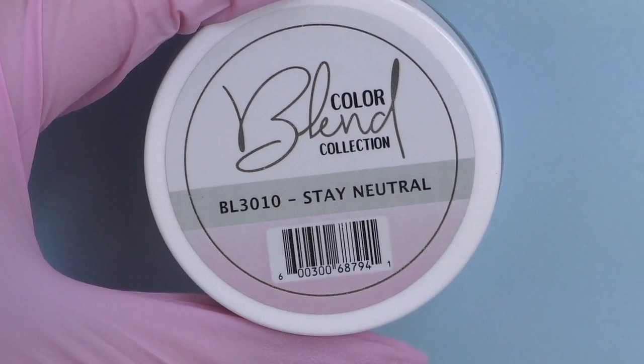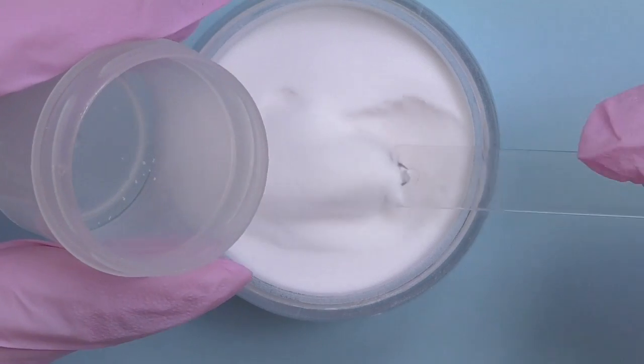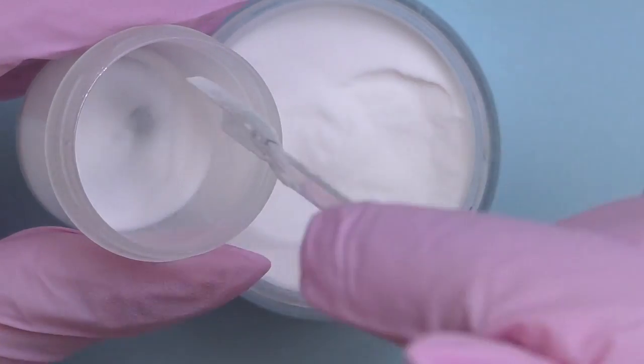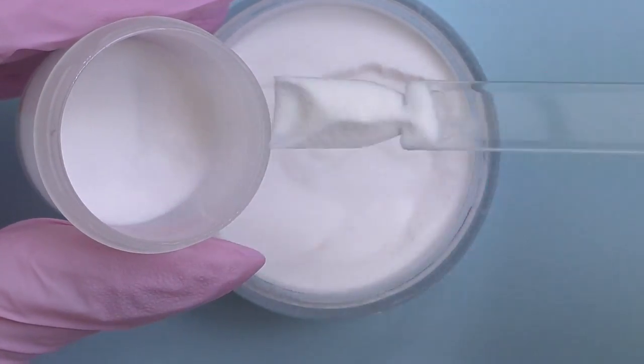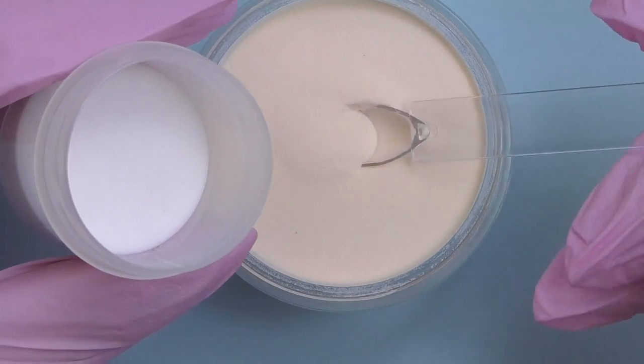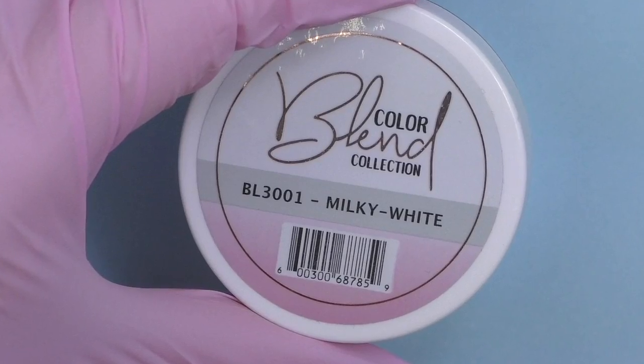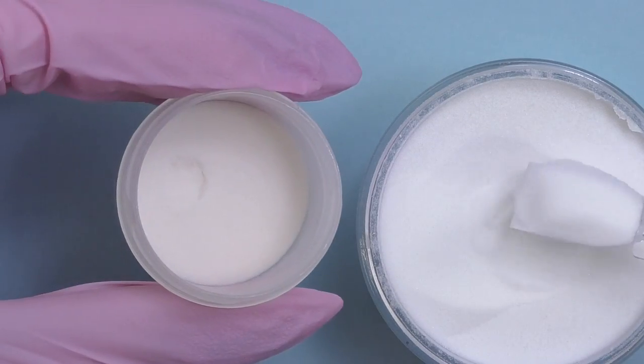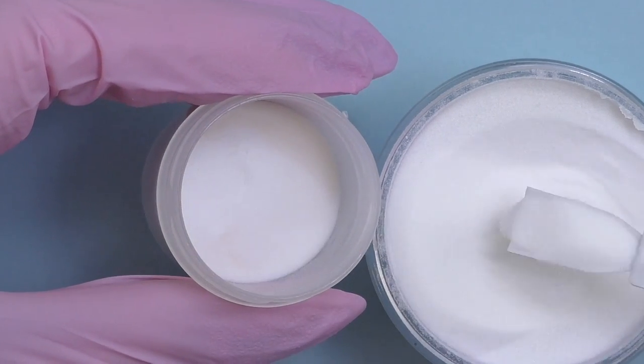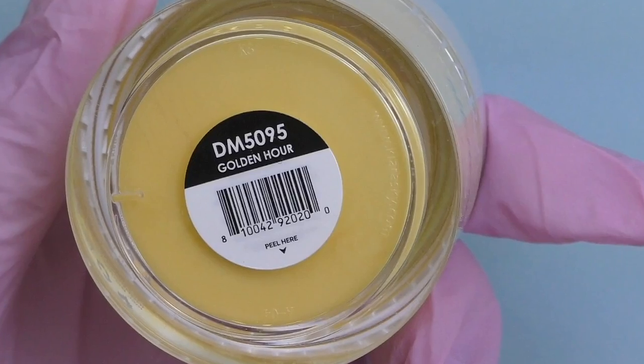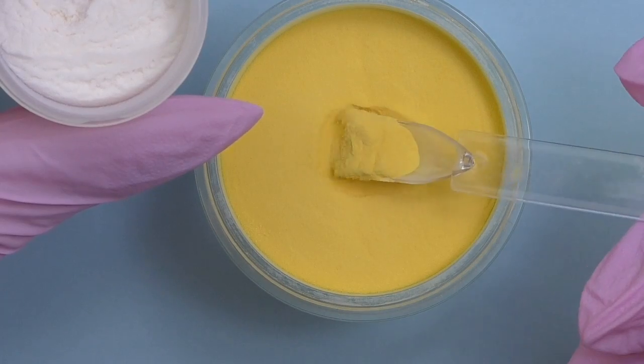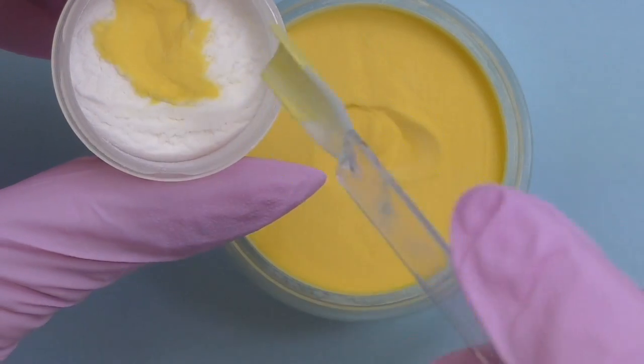So I picked this powder Stay Neutral by Glam and Glitz because it looks very natural. I think this one is going to work. Then I take Honey Blonde from Kiara Sky because we definitely need some warm yellowish colors. Milky White is a bit transparent and this is exactly what natural nails look like. They're not actually white, they have these transparent spots in them.